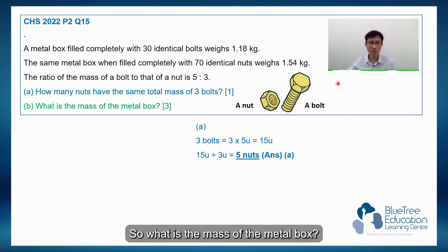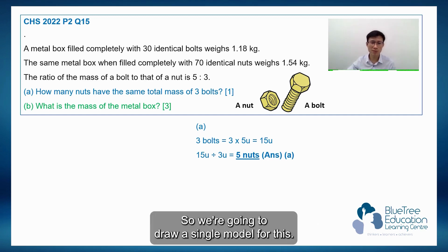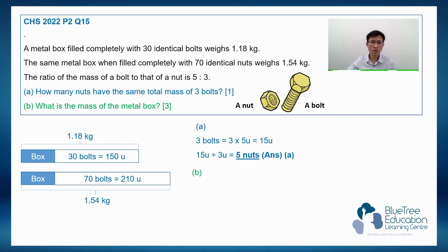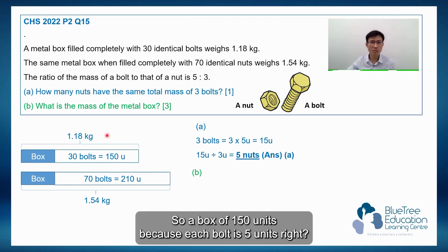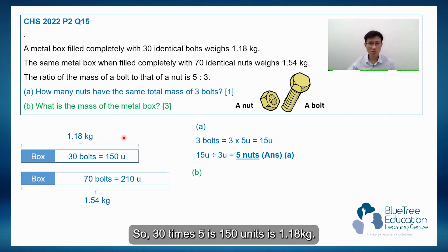So what is the mass of the metal box? So we're going to draw a simple model for this. So a box with 30 bolts weighs 1.18. So a box with about 150 units because each bolt is 5 units, right? So 30 times 5 is 150 units is 1.18 kg.